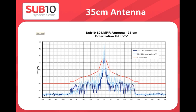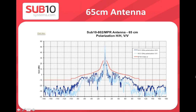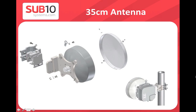Antenna radiation pattern parameters show approximately 13 dB separation between the main lobe and side lobes for both antenna sizes, matching what was mentioned for alignment accuracy requirements.